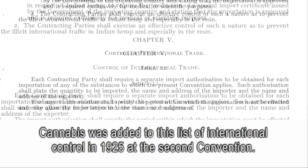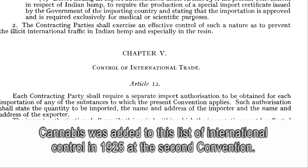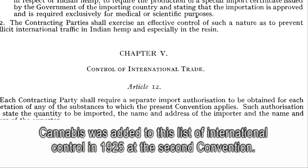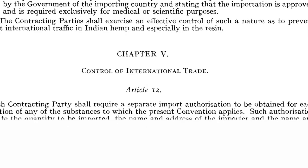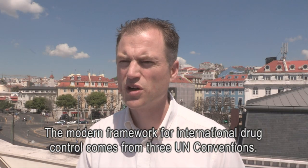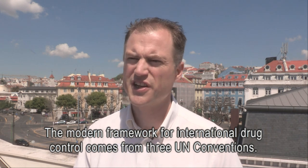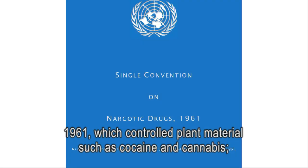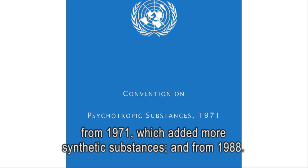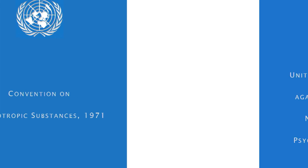Cannabis was added to this list of international control in 1925 at the Second Convention. The modern framework for international drug control comes from three United Nations conventions: 1961, which controlled plant materials such as cocaine and cannabis; 1971, which added the more synthetic substances; and from 1988.